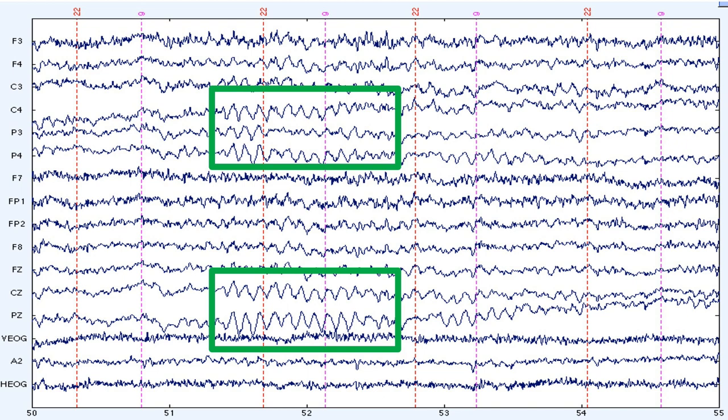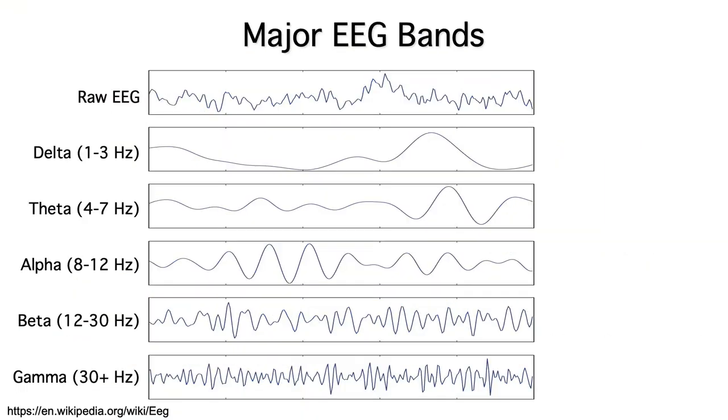Over time, researchers discovered that the EEG contains oscillations in several different frequency bands, which are known as the alpha, beta, gamma, theta, and delta bands.